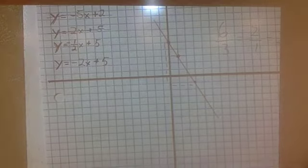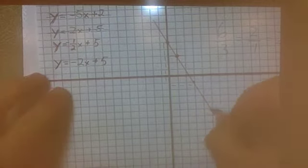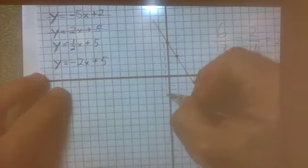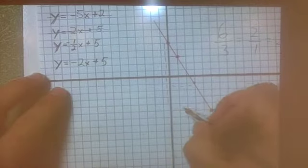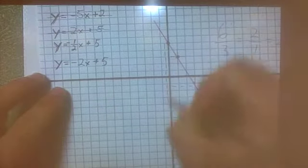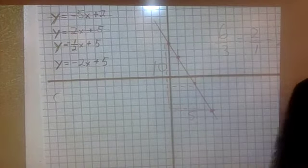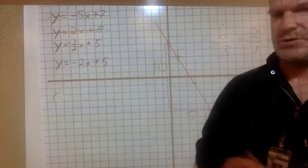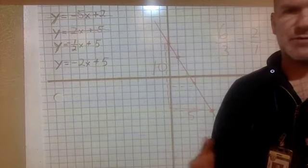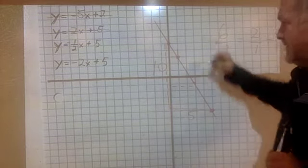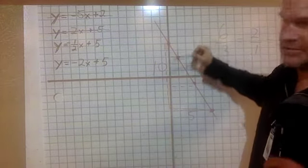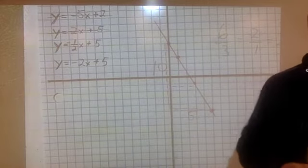Like you could have went all the way to this point right here. That would have been down six, seven, eight, nine, ten, and over five. So if you go from here all the way to there, that's ten and five, which still reduces to two over one. So it doesn't matter what points you pick, your fraction is going to reduce to two over one. If you pick the ones that are closest to each other, then you just won't have to reduce your fraction. That's all.